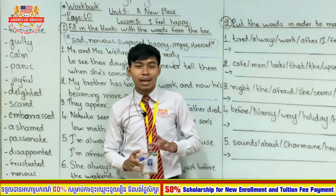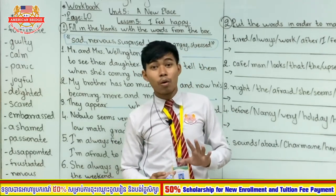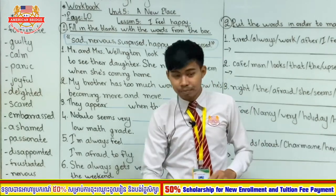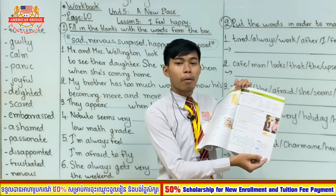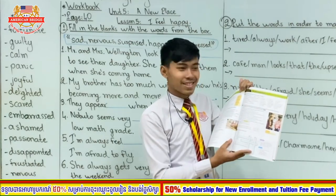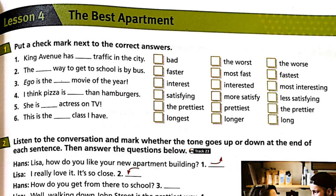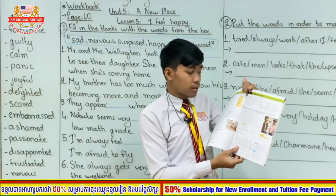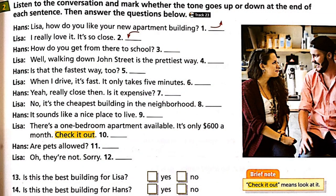Now let's go to today's work. As I promised, we are going to do all the exercises in lesson four of your workbook. Please open your workbook to page 39. Lesson four has three exercises. Number one: put a check mark next to the correct answer. Read the six sentences — there are three answer choices for each sentence, and you have to check the correct one. There is only one correct answer per sentence.